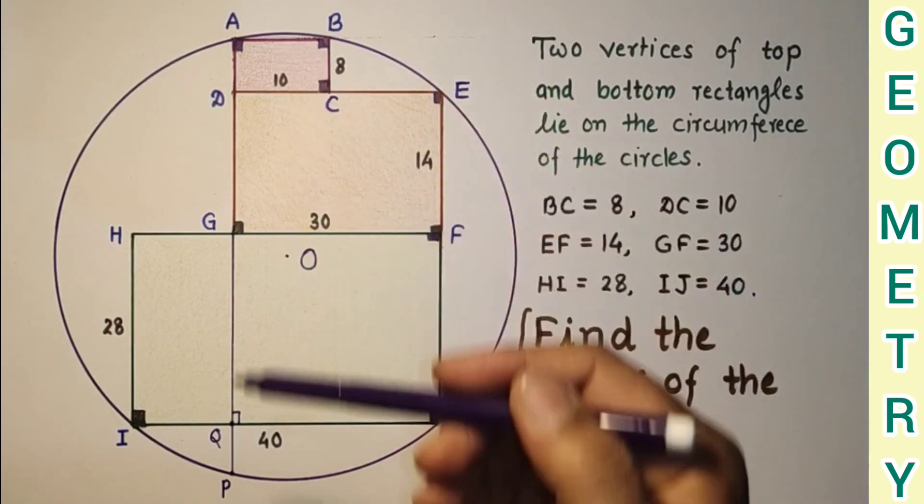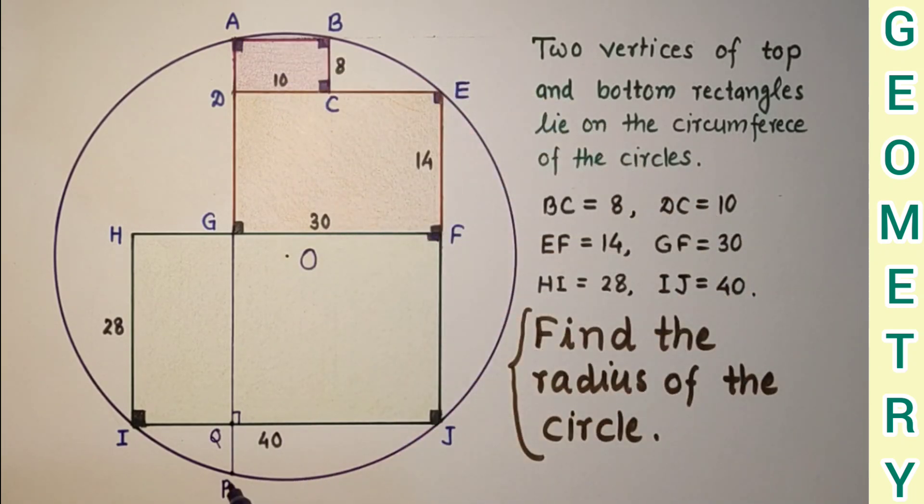So AP and IJ both the chords are intersecting each other. After extending this AG up to P, this AG and IJ both the chords are intersecting at point Q.